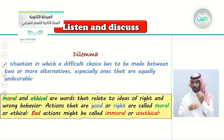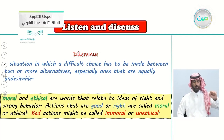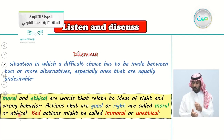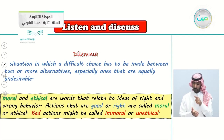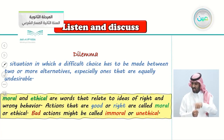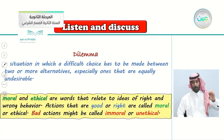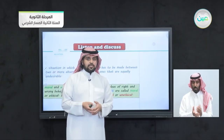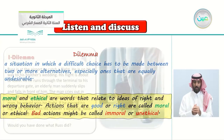The words moral and ethical relate to the ideas of right and wrong behavior — they relate to our behavior. Actions that are good or right are called moral or ethical. Bad actions might be called immoral or unethical. For example, cheating in an exam is immoral or unethical.